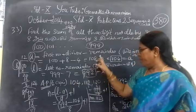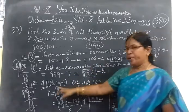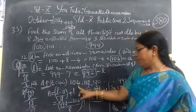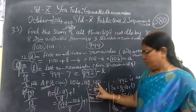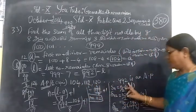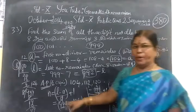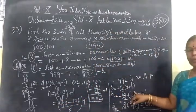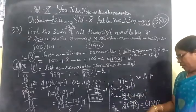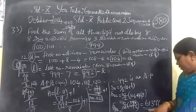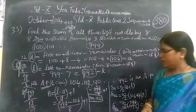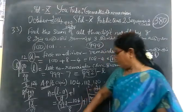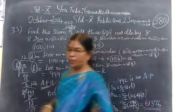So after finding A and L, A is first term, then the next term, then the third term, then the last term. Now n equal to L minus A by D plus 1, then SN equal to n by 2 bracket A plus L. So the answer is 61,376 and this is very very important question. Thank you.